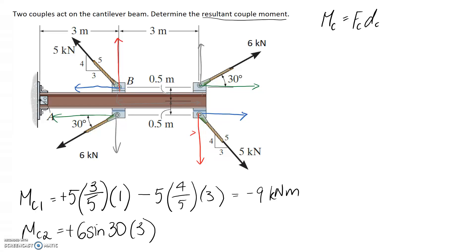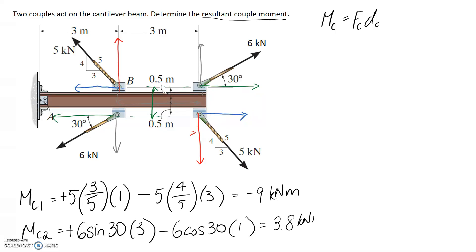For the horizontal parts, it's 6 cos 30 because we want the adjacent side to this angle. We then multiply by the separation distance between the horizontal forces, which corresponds to a total of 1 meter. Thinking about direction, these green horizontal forces will rotate clockwise, so that goes in as negative. Putting it all into a calculator gives an overall result of 3.8 kilonewton meters.